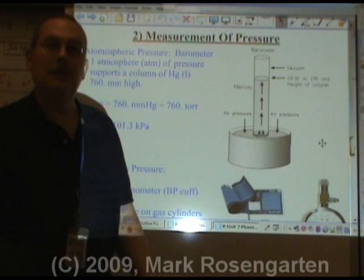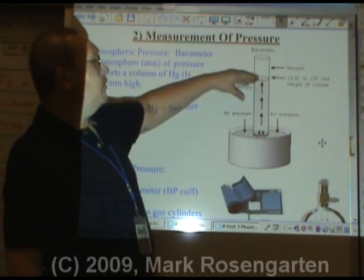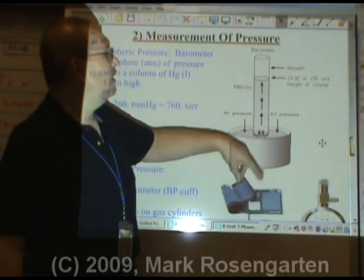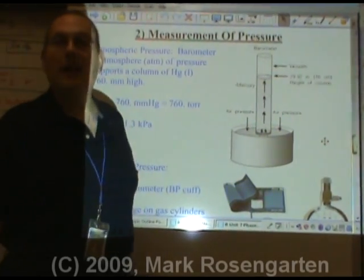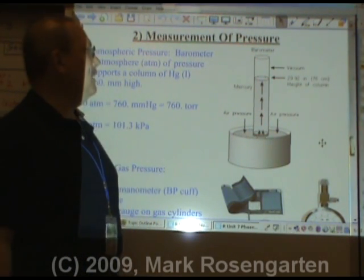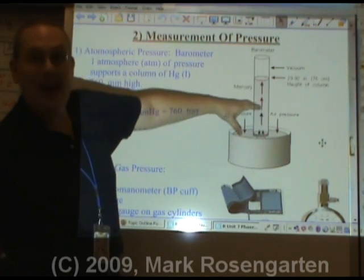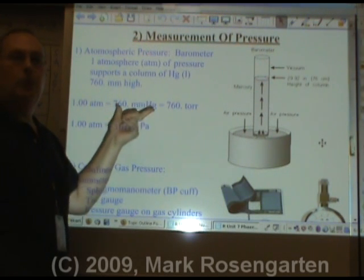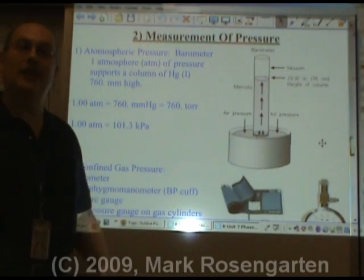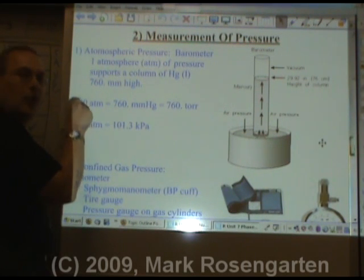That's why on the weather channel they say the pressure is rising or falling — literally, that's what it's doing. When more air pressure pushes down, it pushes the mercury higher. When pressure is falling, there's less pressure pushing down and the mercury column goes down. 760 millimeters of pressure is also referred to as 760 torr, named after Evangelista Torricelli, and also as 1.00 atmosphere.